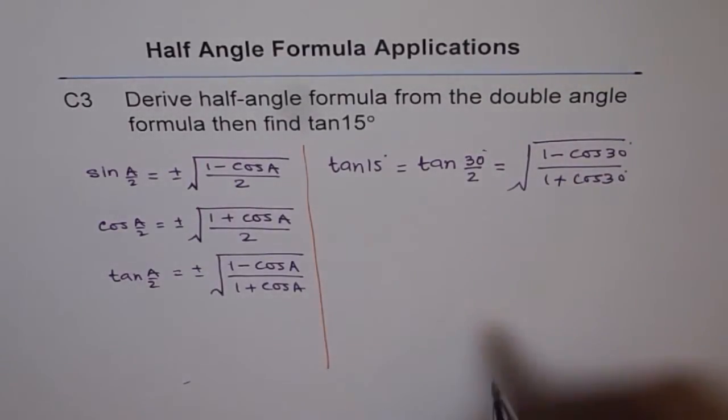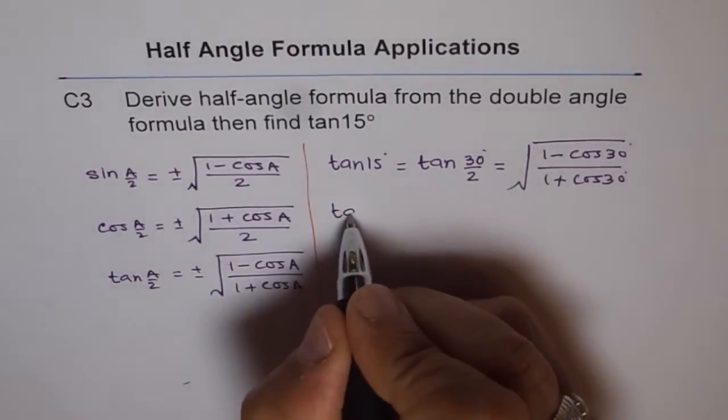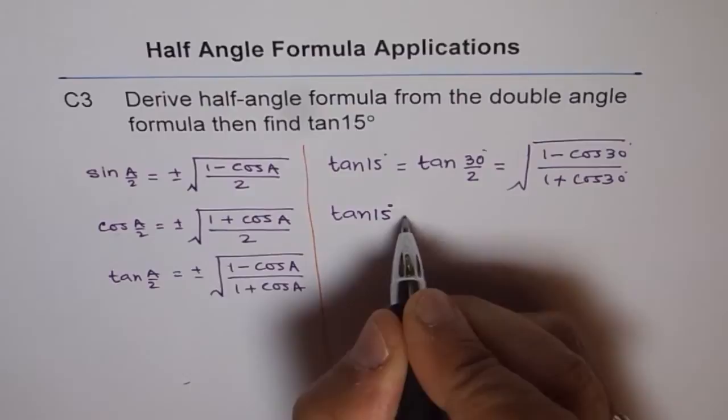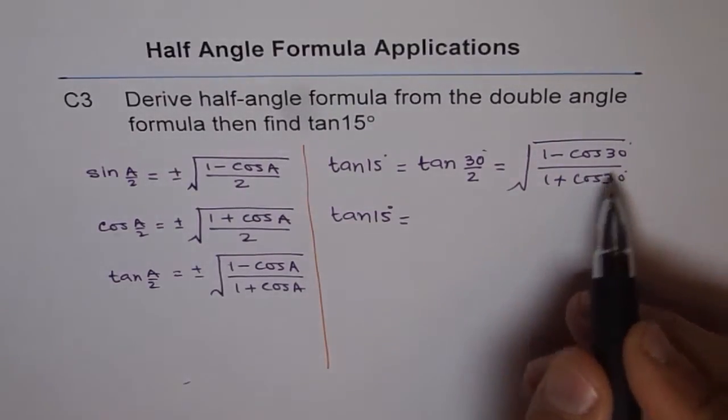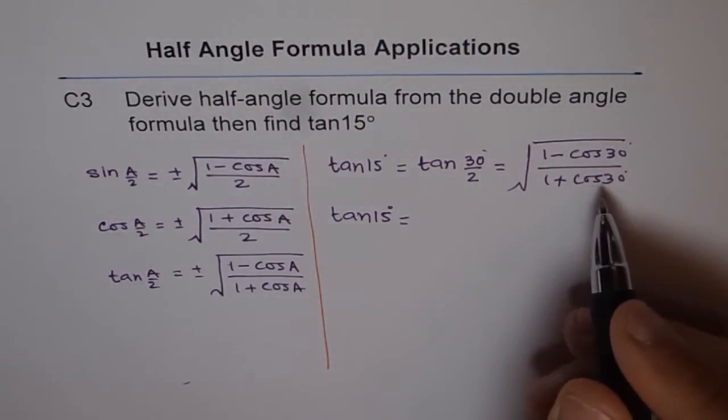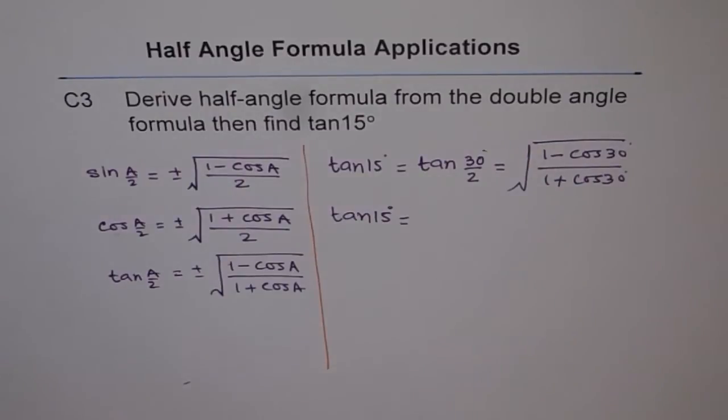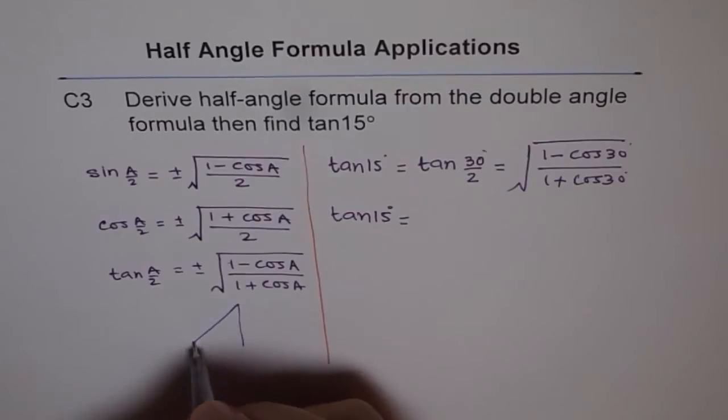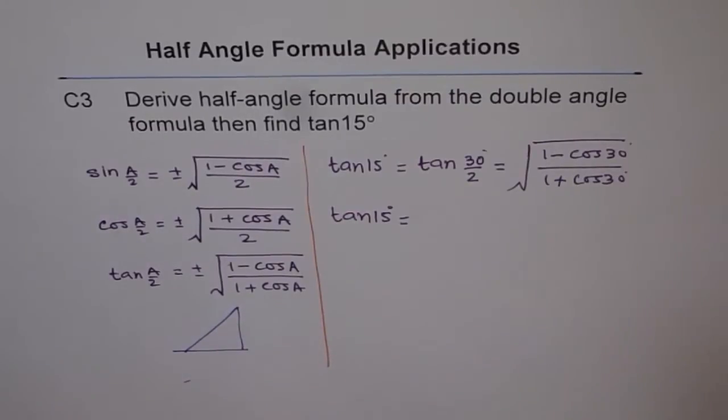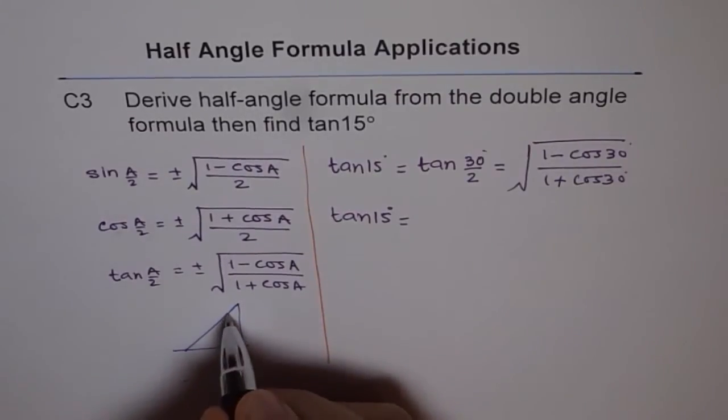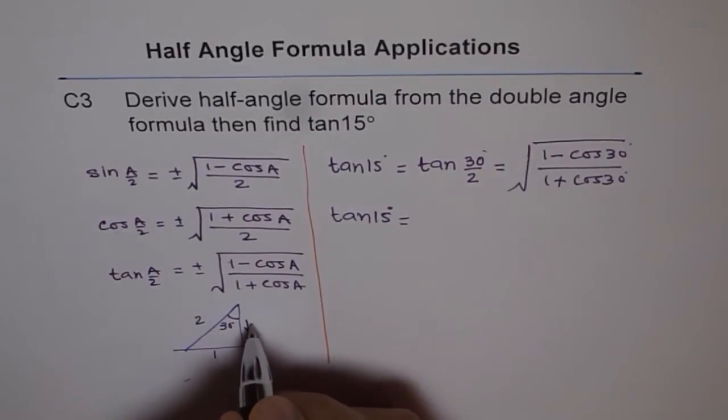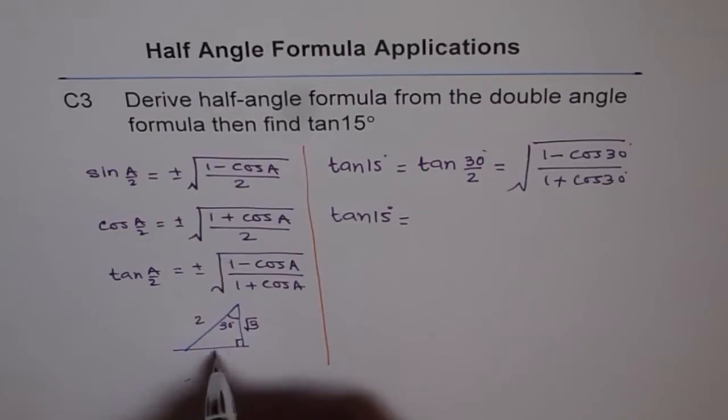So, that is how we can calculate. We can say tan, which is 30 over 2 is 15 degrees, is equal to, I will plug in the values for cos 30 and then calculate it out. So, using our standard triangles, let me make one here. So, if this is 30 degrees, then the sides are 1, 2 and square root of 3, right? In this right triangle.